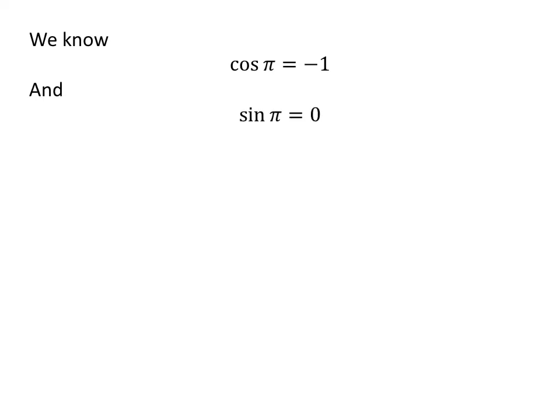We know the value of cos π = -1 and sin π = 0. So the polar form of the complex number (1 - i)^4 is 4(cos π + i sin π).